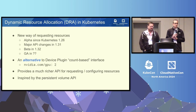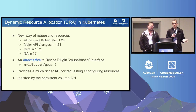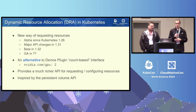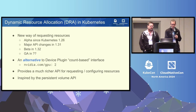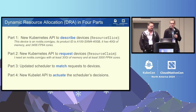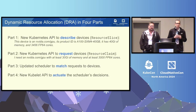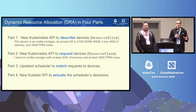DRA provides a much richer API to express complex scenarios like requesting certain things with attributes and configuring resources. The motivation for it, and some of the code, was actually borrowed from the persistent volume API. So if you are familiar with that, there will be certain parallels to it.